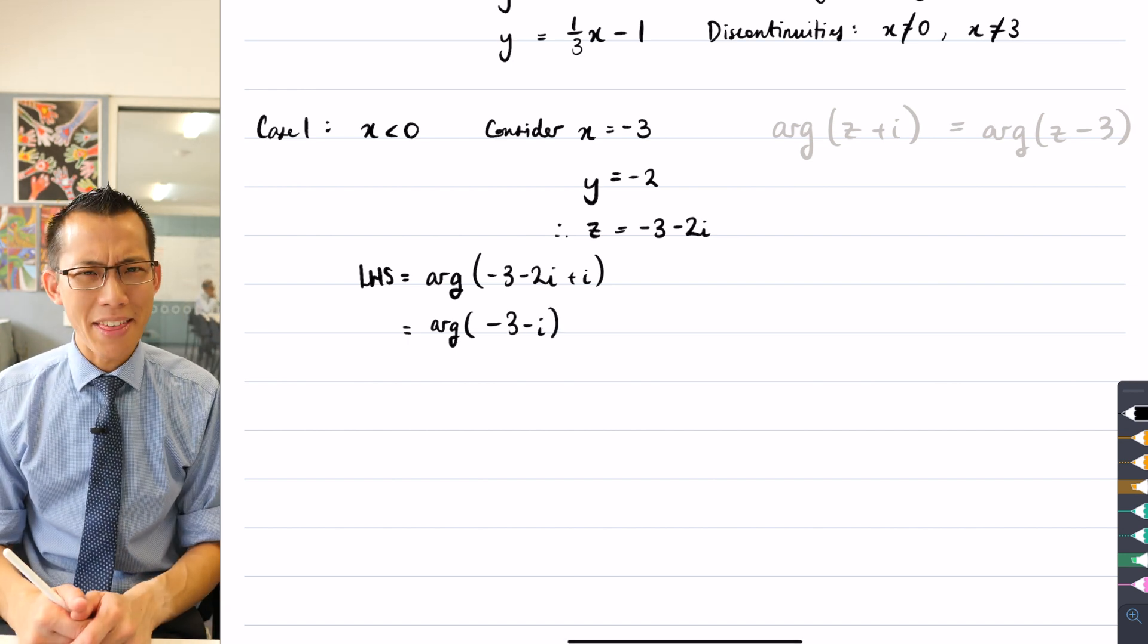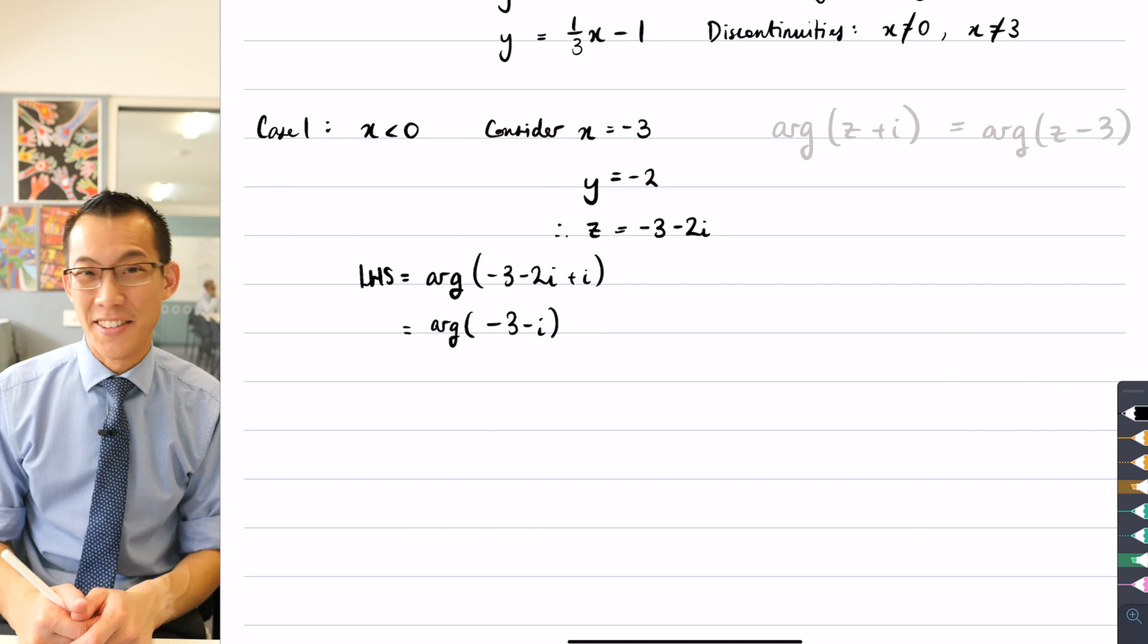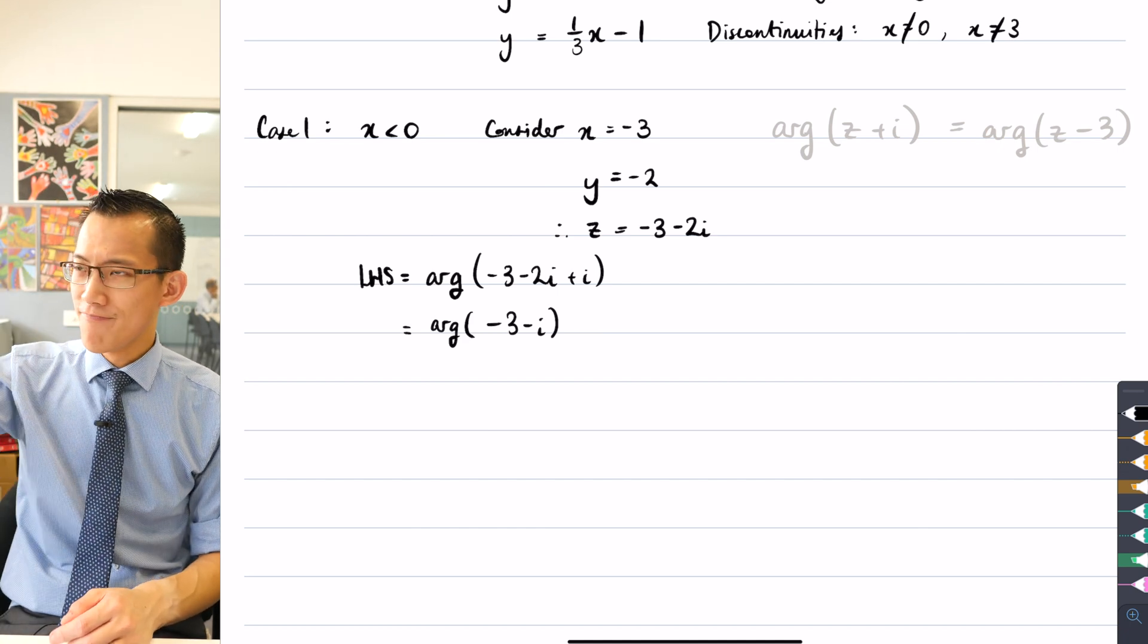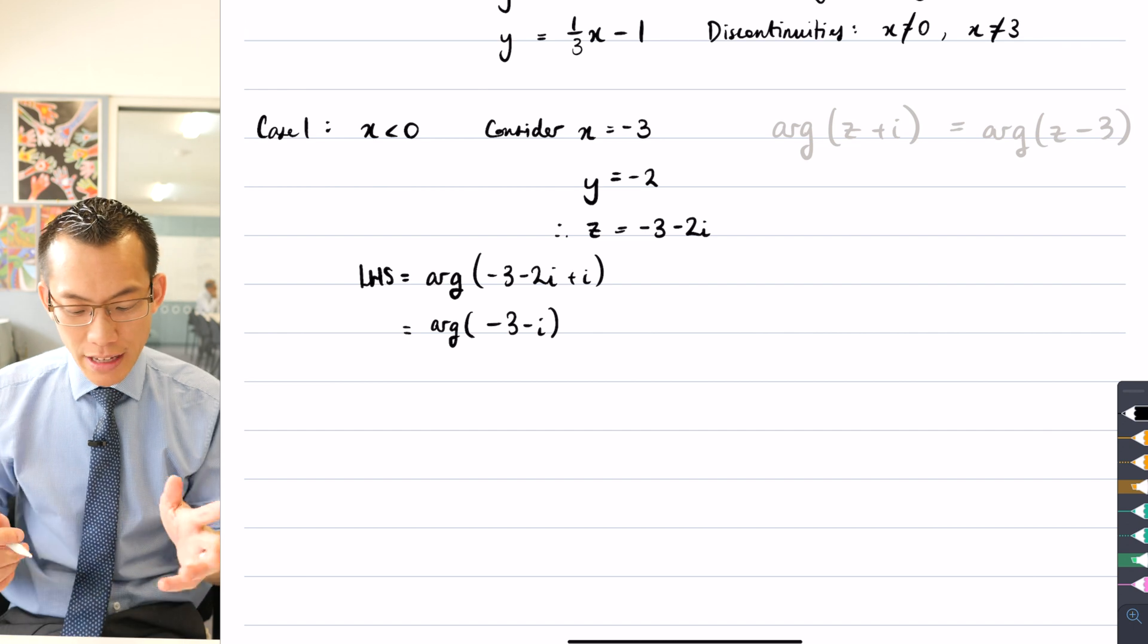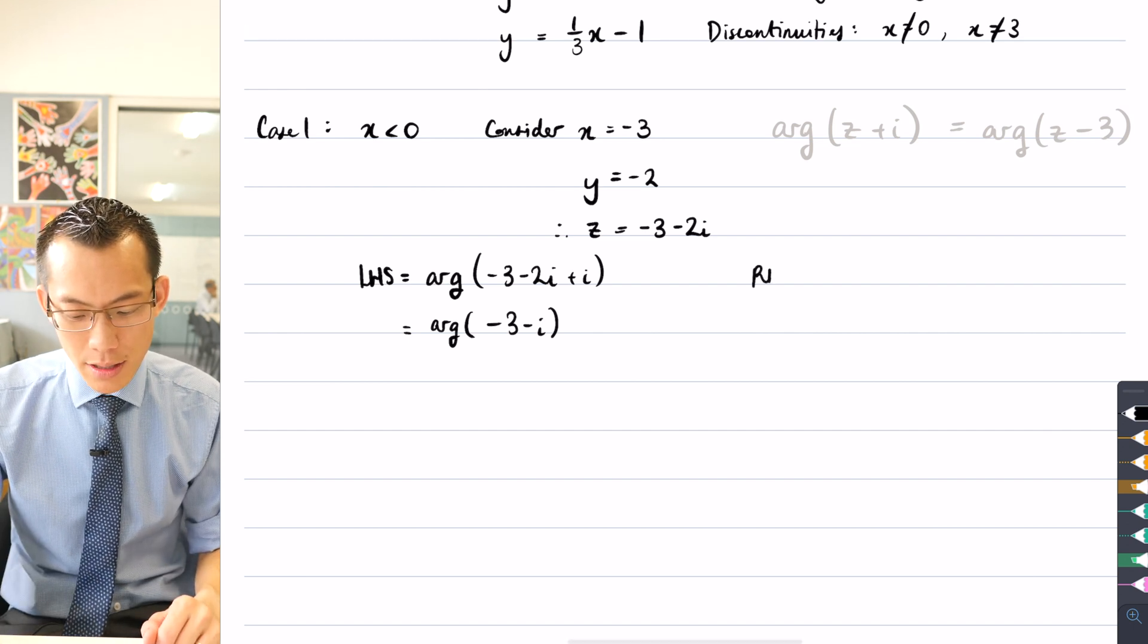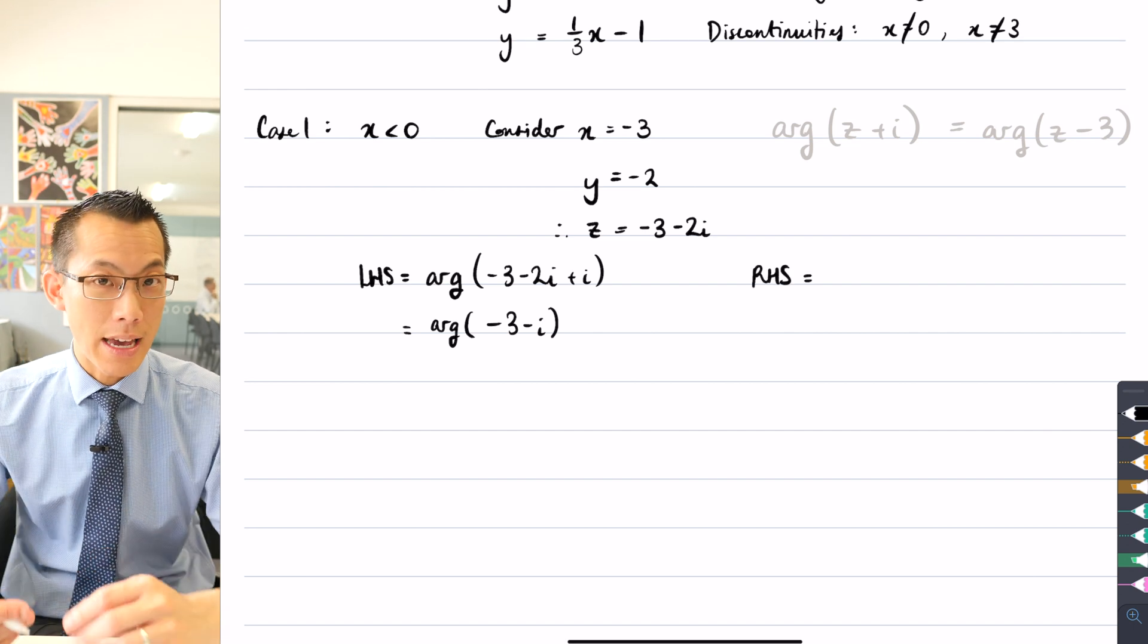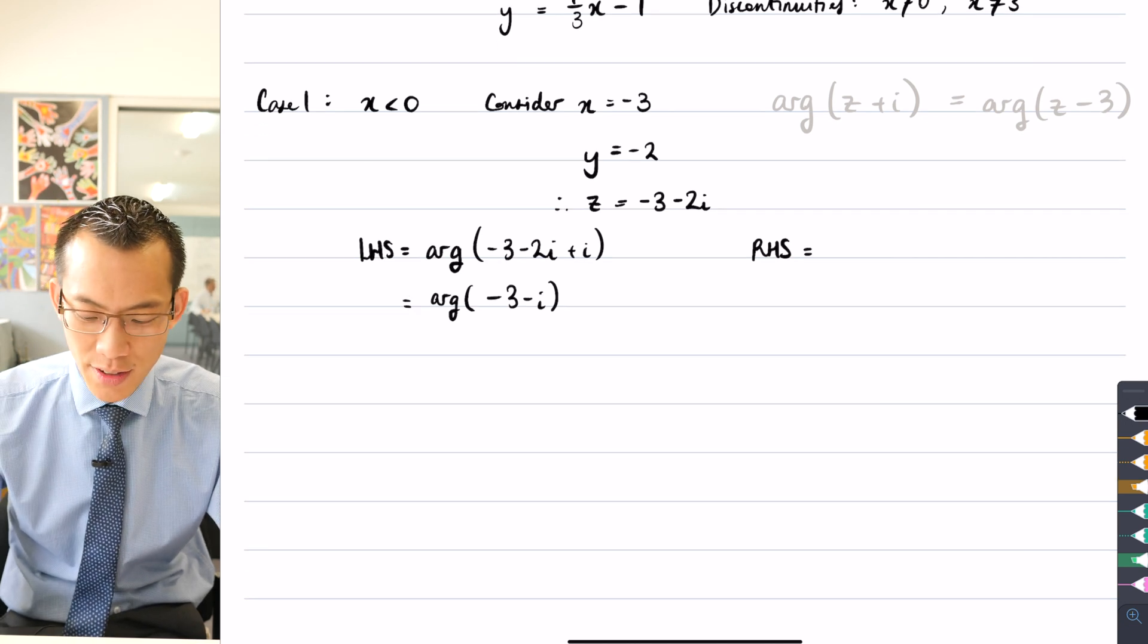Now I don't know what that angle is off the top of my head. It's not an exact value. It's where is it? It's in the third quadrant. Okay, but what I can do is I can have a look at the right-hand side, and I can see if I end up getting a similar or indeed an equal argument. Let's give it a go.